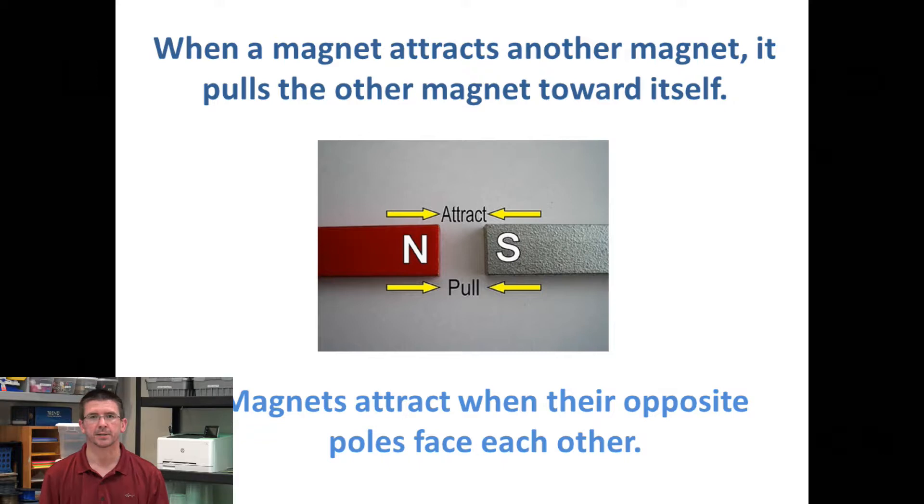Everybody's heard the expression opposites attract, so that's true with magnets, with electricity, and with a lot of other things. The north pole of a magnet will pull on the south pole of a magnet. That's just this idea of magnetic attraction that causes magnets to stick together.